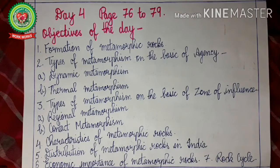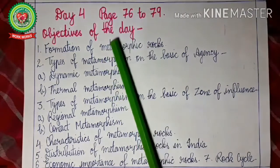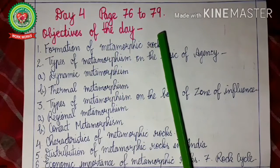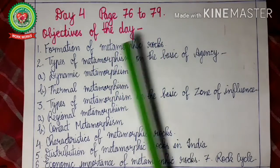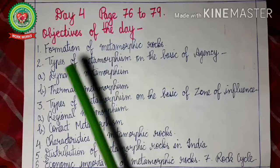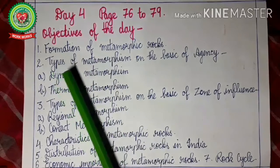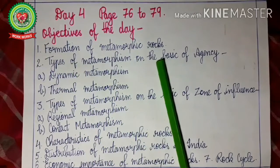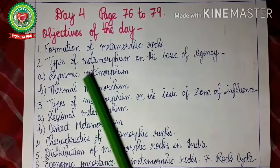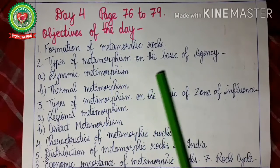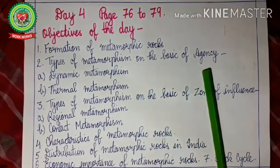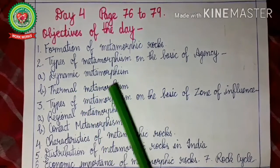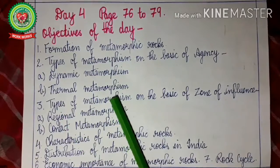Today we will study page number 76 to page number 79, Metamorphic Rocks. The objectives of today's class are to know about the formation of metamorphic rocks, and to discuss the types of metamorphism on the basis of agency — dynamic metamorphism and thermal metamorphism.